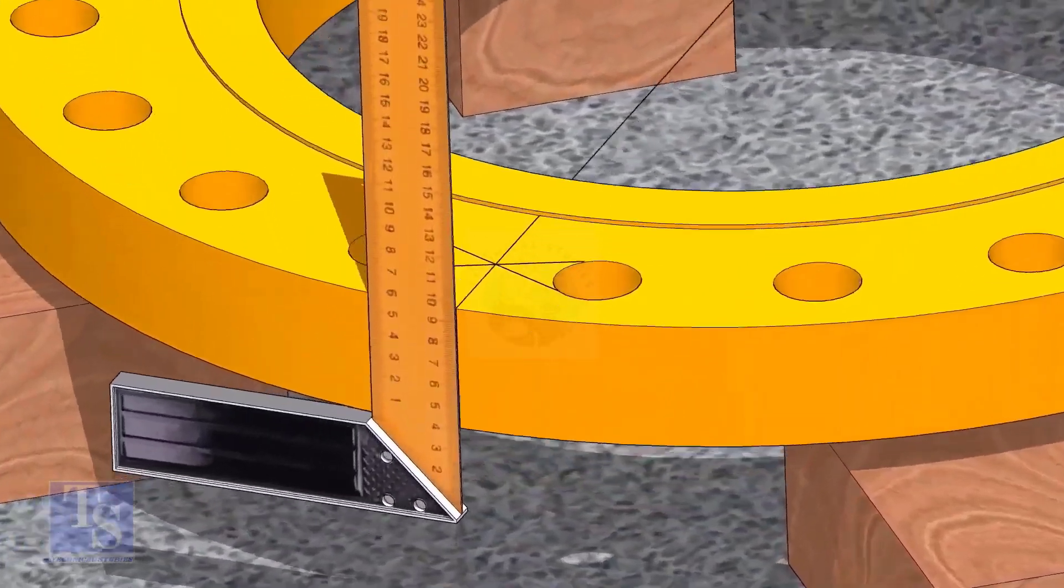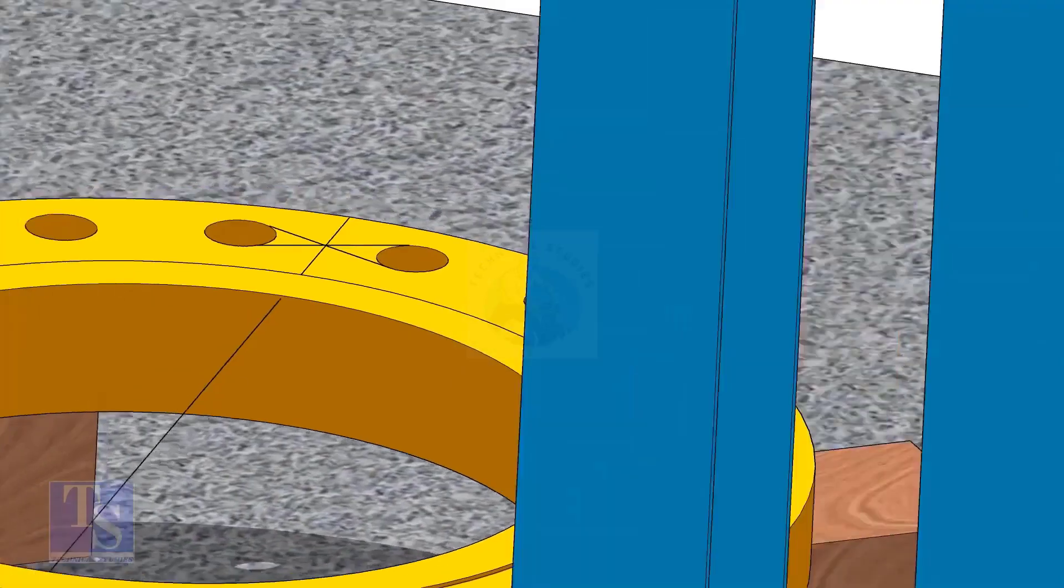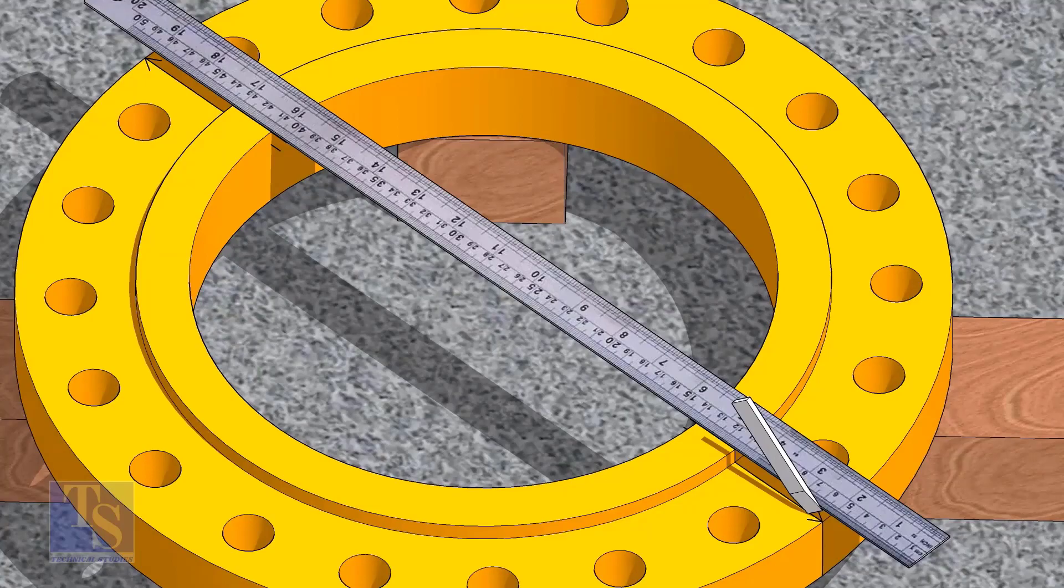Now, transfer the center line to the sides of the flange. Overturn the flange and transfer the center line on the back side of the flange.